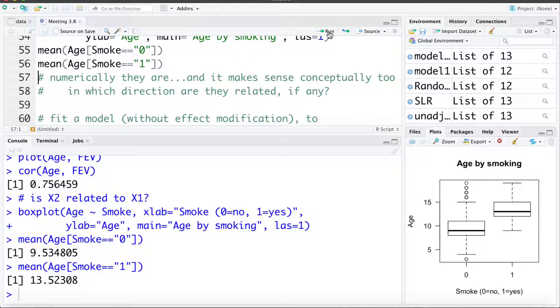Conceptually it makes sense that they'd be associated, right? As the kid is older they're more likely to smoke than when they're younger. As age increases the likelihood of smoking increases. And if we think of the direction of association, it's going to be age having an influence over smoking. Smoking cannot influence your age.